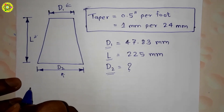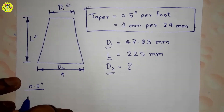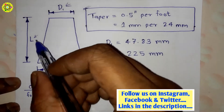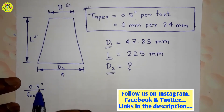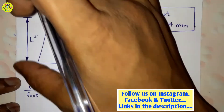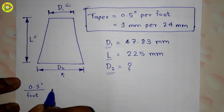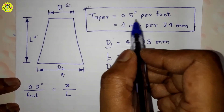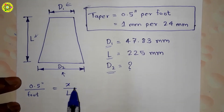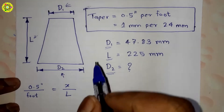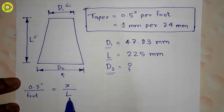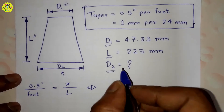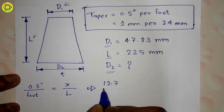We are taking 0.5 inches per foot. For length l, we need to calculate the taper x for this length. So we set up the proportion: x per l equals 0.5 inches per foot. We need to calculate the taper for the length l, so x per l, where the taper is 0.5 inches per foot.